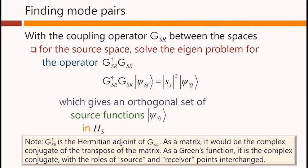Incidentally, the Hermitian adjoint of GSr as a matrix would be the complex conjugate of the transpose of GSr. And as a Green's function, it's a complex conjugate with the source and receiver points interchanged.